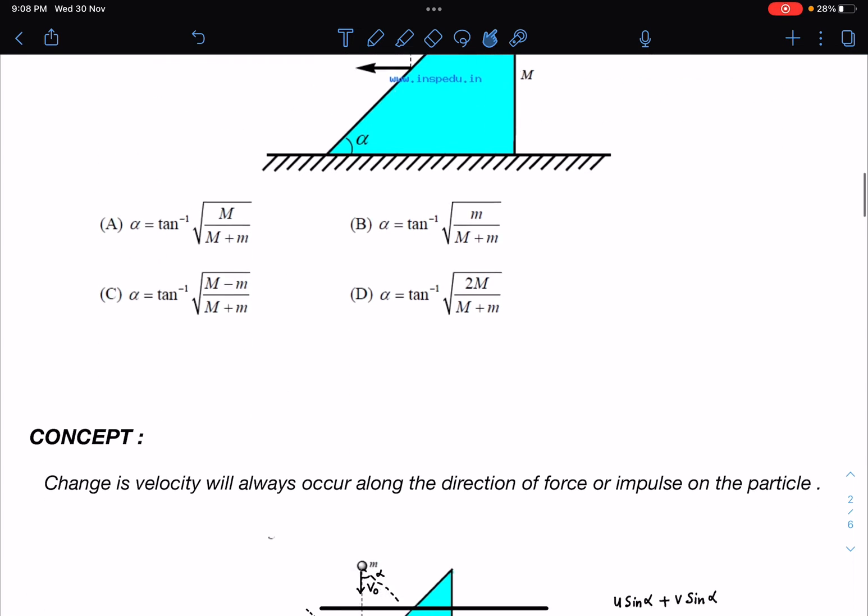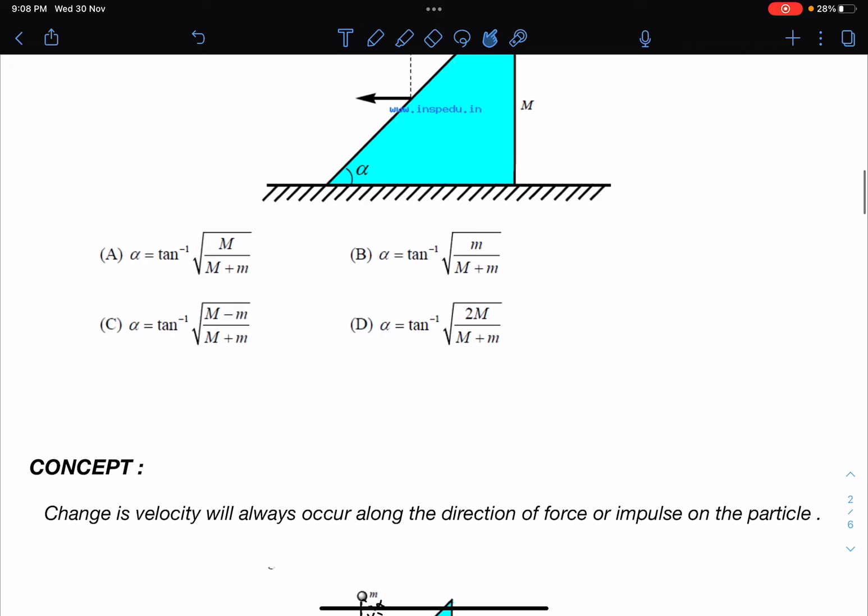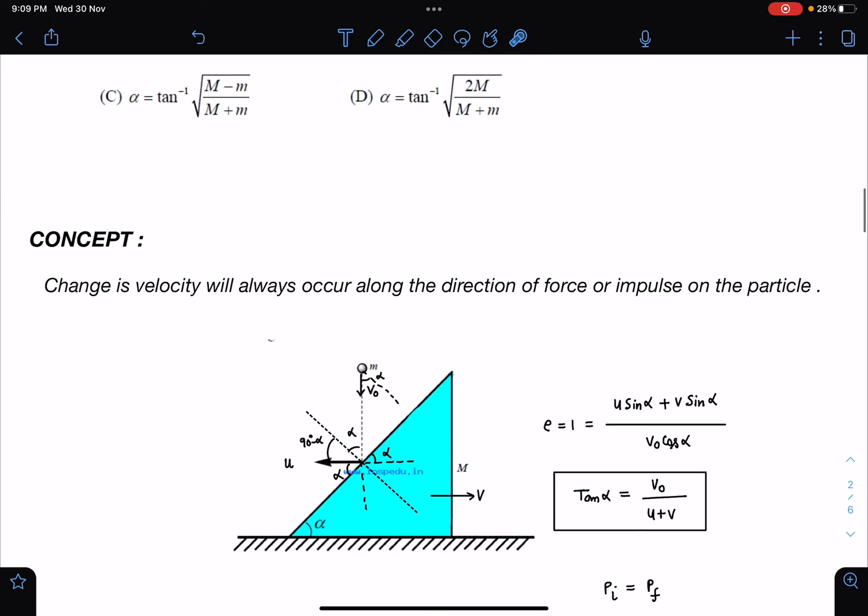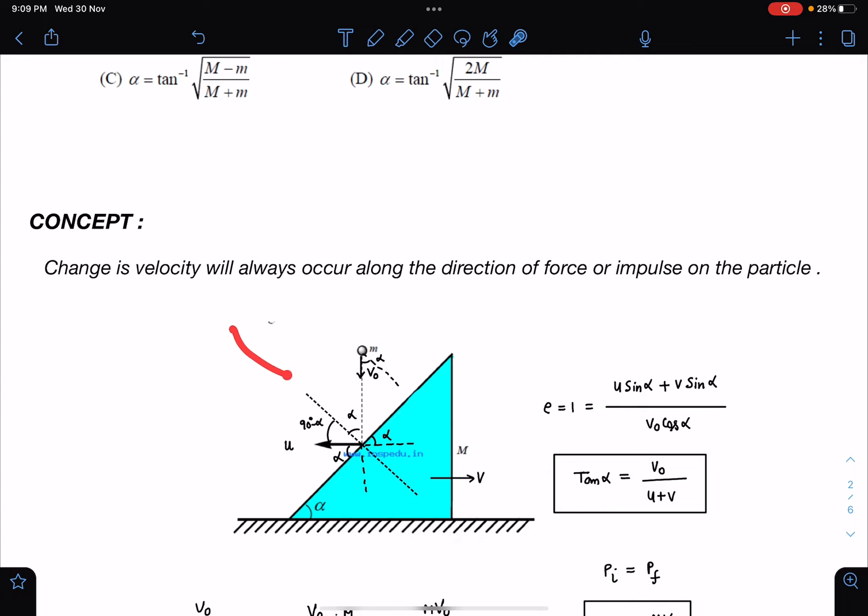Concept-wise, here you can see the change in velocity will always occur along the direction of force or impulse on the particle. In this case, since friction is not present, definitely this force is going to be perpendicular to the inclined plane.